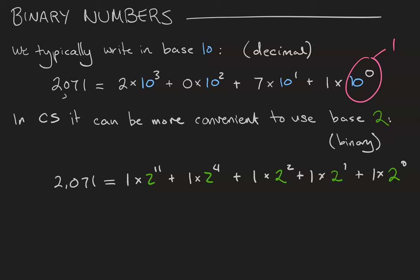In computer science it can be more convenient to use base 2, or binary notation. The number 2071 can be decomposed into 1 times 2 to the 11, plus 0 times 2 to the 10, 2 to the 9, 2 to the 8, etc. Your next 1 is in the 2 to the 4's place, then 2 to the 2, 2 to the 1, 2 to the 0.